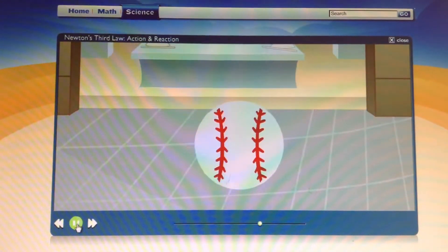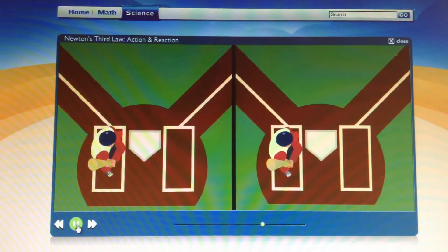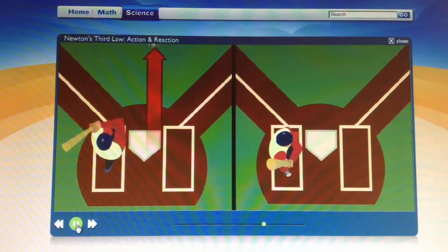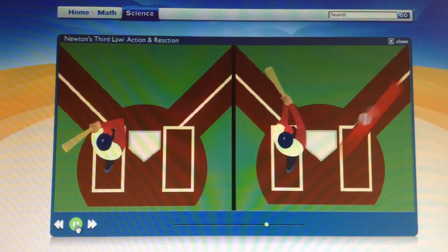How about when a baseball bat hits a ball? Yep. Both objects hit each other with equal force in different directions. The ball goes flying because it's smaller. The way the bat is moving when it hits can make the ball go in different directions.